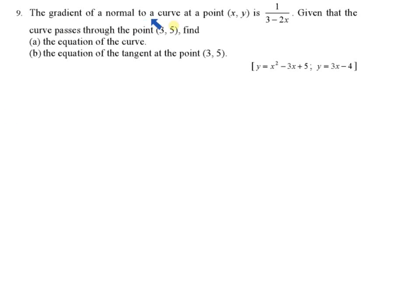Example 9: the gradient of a normal to the curve at the point xy is equal to 1 over 3 minus 2x. This one is a little bit tricky because they have given you the gradient for the normal, that is 1 over 3 minus 2x. This curve passes through the point 3, 5. To find the equation of the curve, you must think of dy/dx — you have to find the dy/dx here.